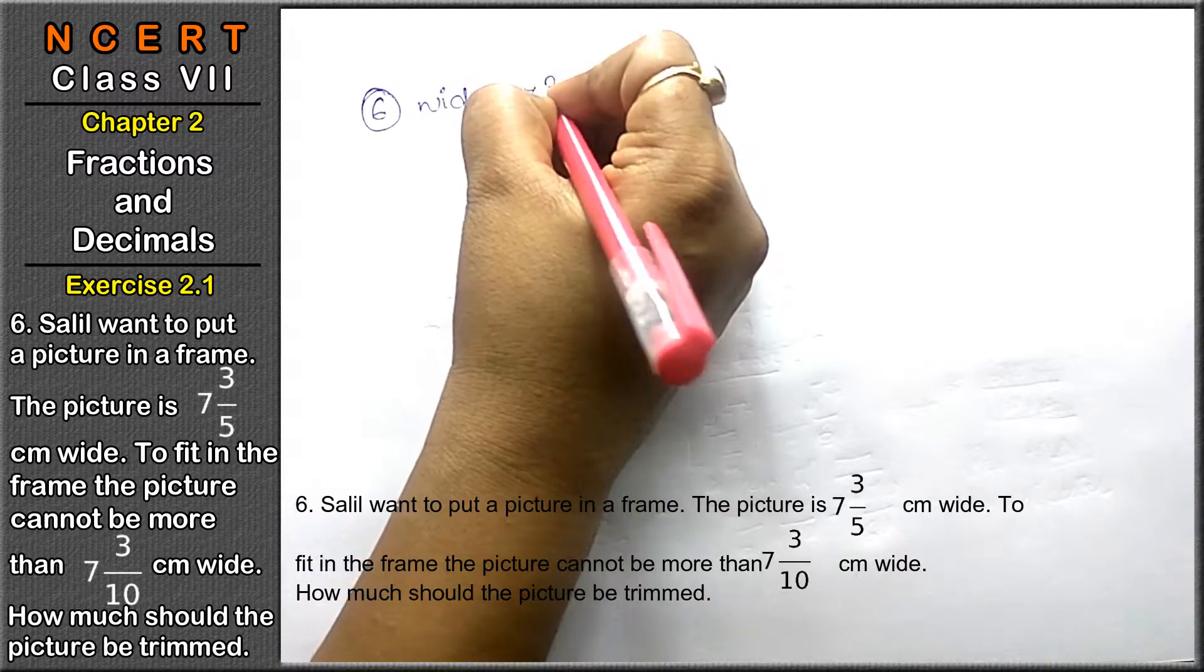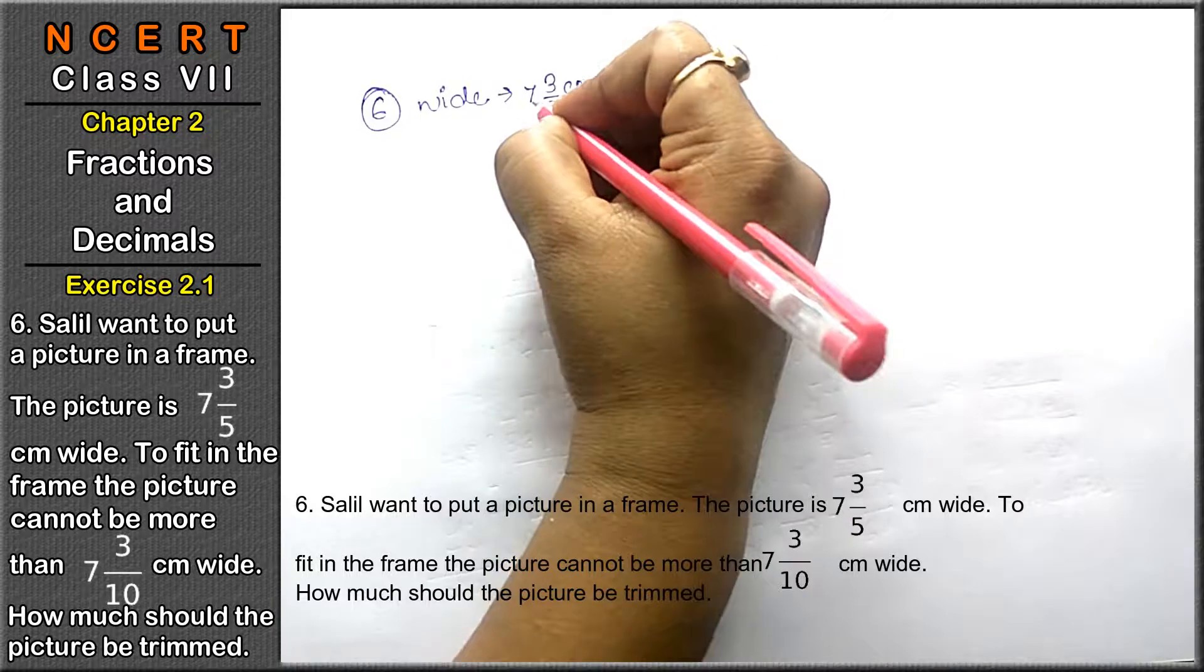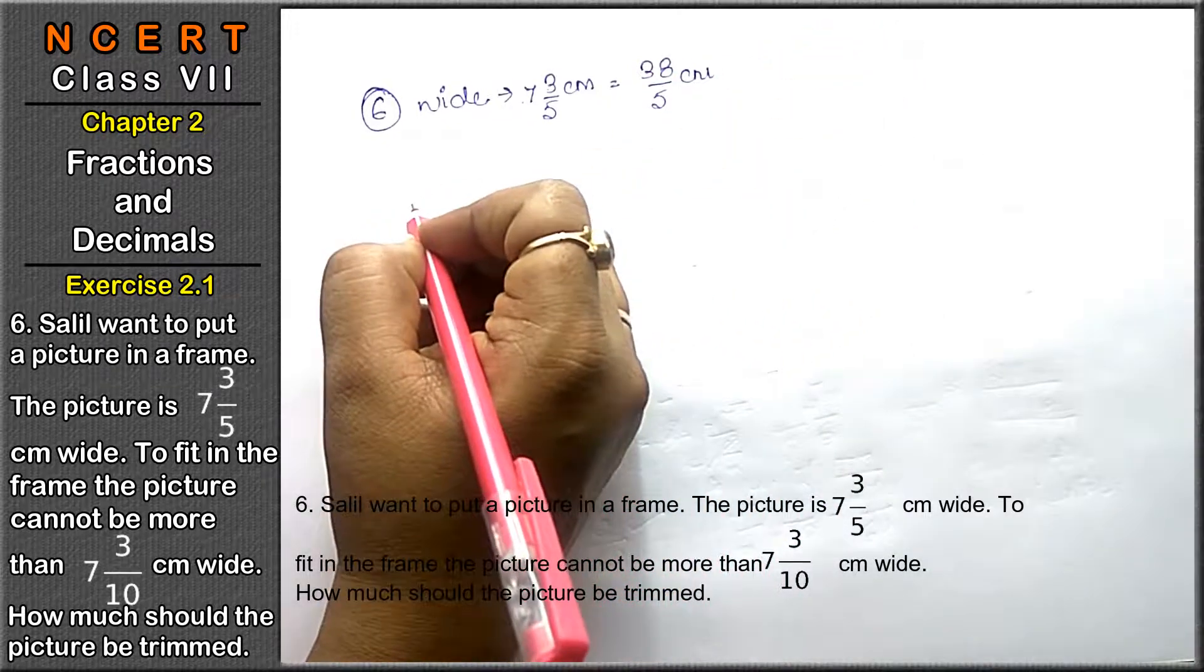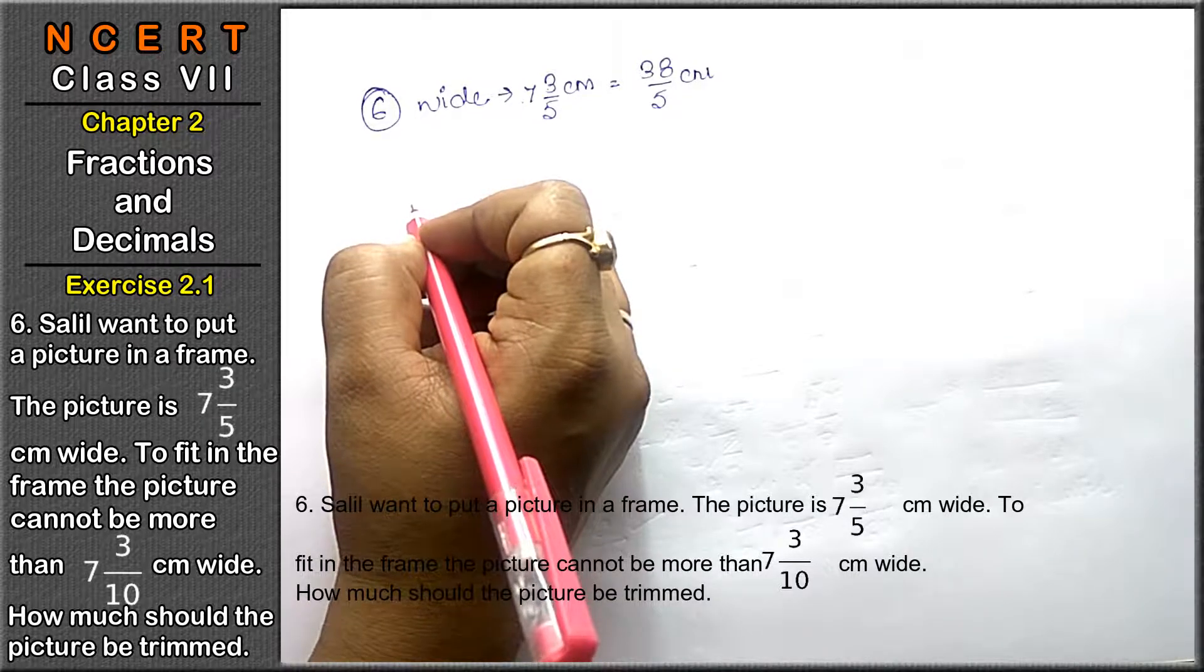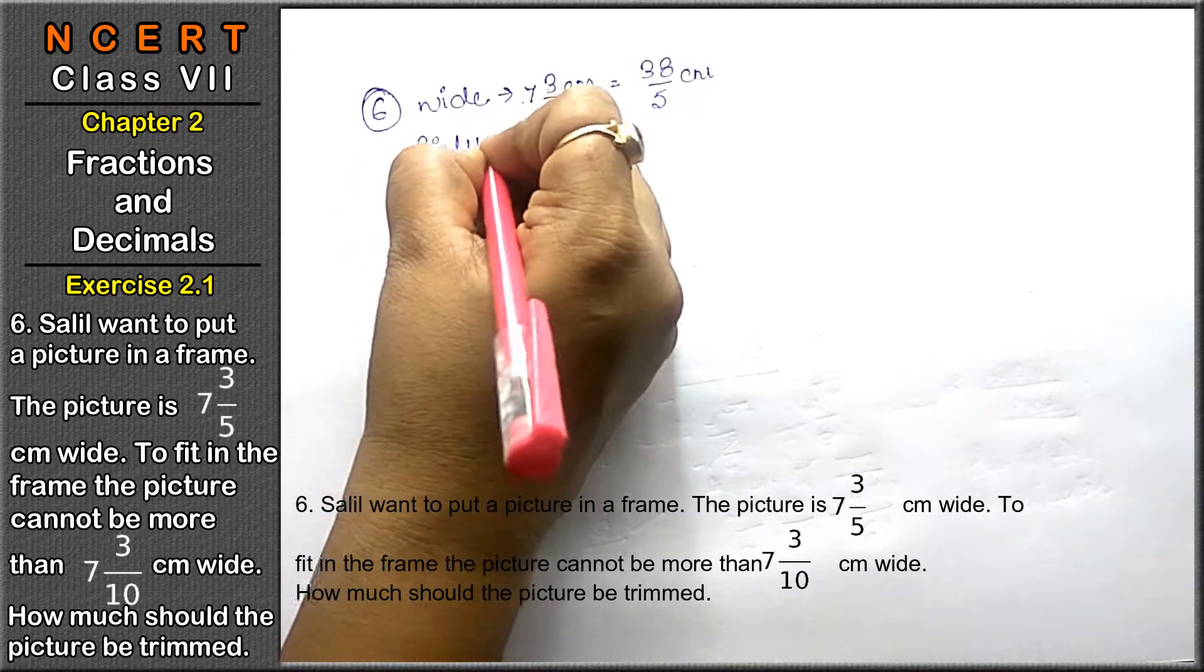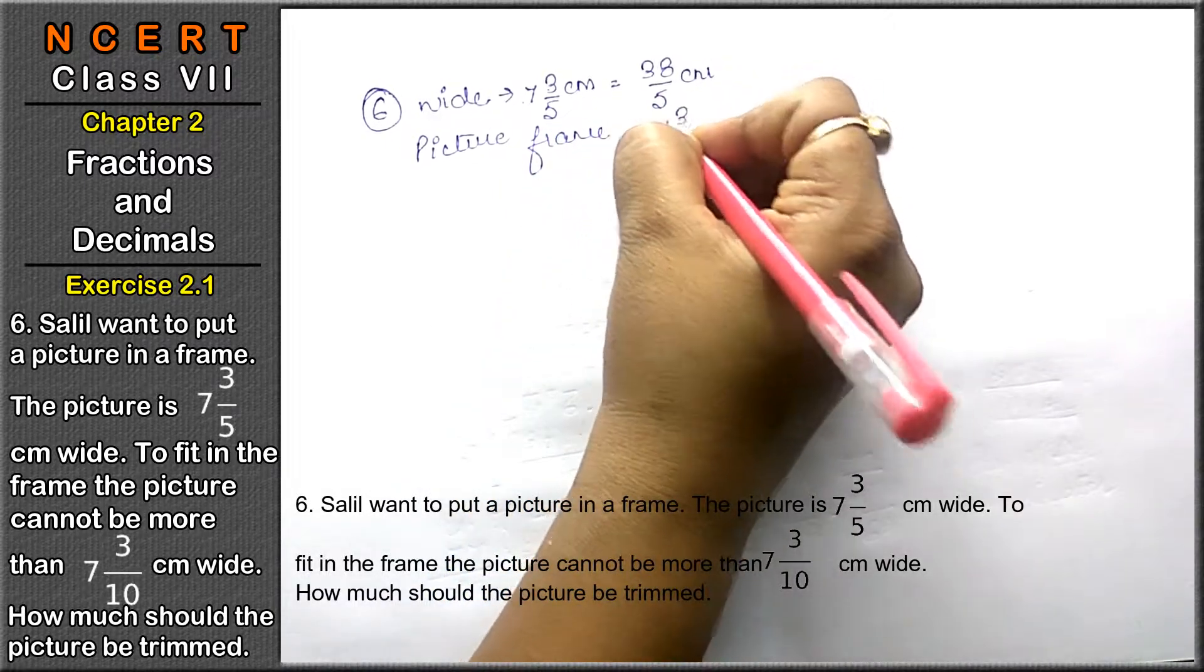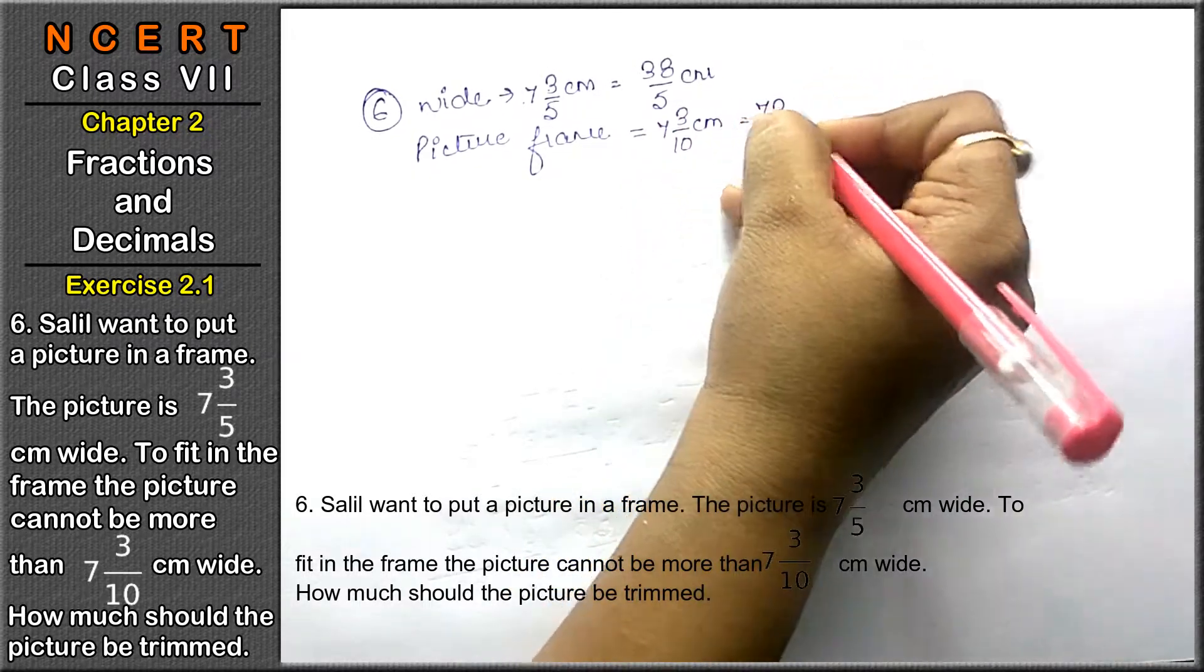Now we will change it into improper fraction. 5 times 7 is 35, 35 plus 3 is 38 upon 5 centimeter, right? Now, to fit in the frame, the picture cannot be more than 7 whole 3 upon 10. The picture frame should not be more than 7 whole 3 upon 10 centimeters, that means 73 upon 10 centimeters.